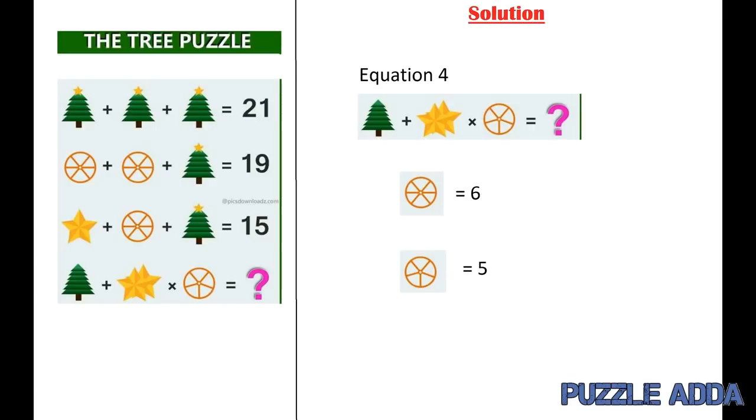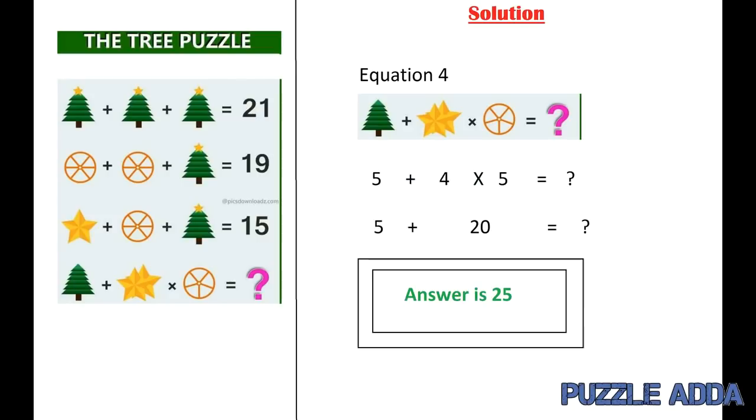And then there is a tree without star. So a tree with star minus a star is equal to 5. So the answer to this puzzle is 25. This is the correct solution of this puzzle.